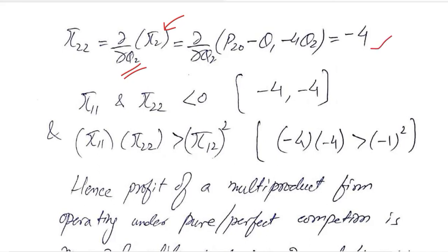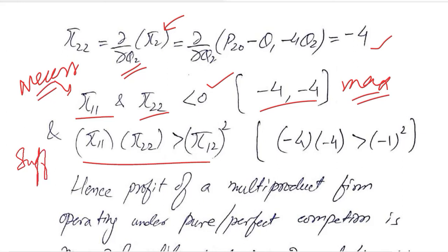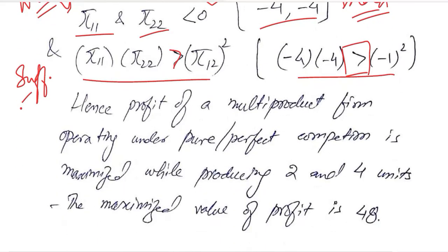Now we can analyze these values. π₁₁ and π₂₂ both are negative. It is a good sign because it signifies a maximum point. However, we also check the sufficient condition, because this is the necessary condition. In the sufficient condition we are getting a greater than sign as you can see here, numerically it is proved. So the profit of this multi-product firm operating under pure perfect competition is maximized while producing 2 and 4 units.